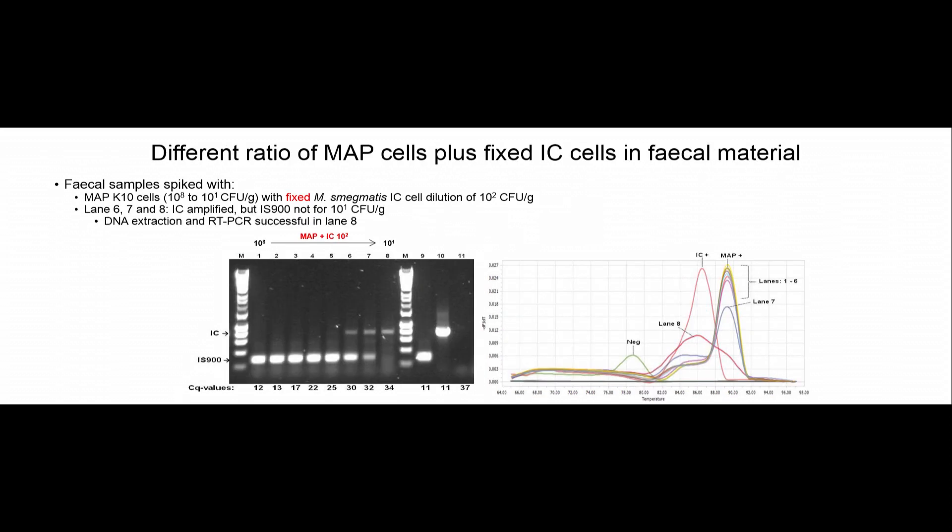For an unknown fecal sample, how much smegmatis should I add to get a nice result? I did the same serial dilution for MAP K10 from 10 to the 8 down to 10 to the 1, and kept the smegmatis internal control constant at 10 to the 2. The peaks kind of dropped for my internal control as MAP concentration increased, but all of the MAP targets were nicely amplified. The internal control came through except at MAP K10 10 to the 1, but overall the DNA extraction worked.